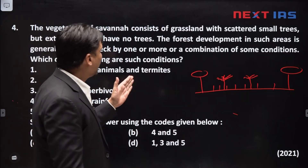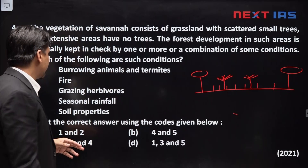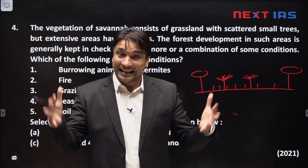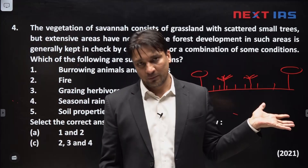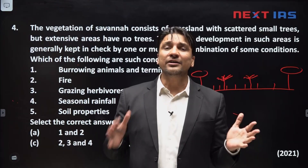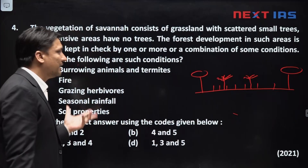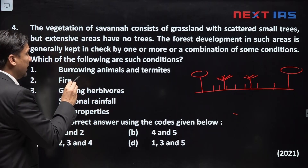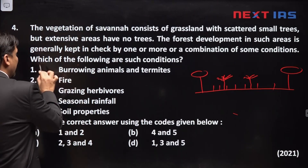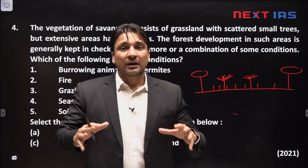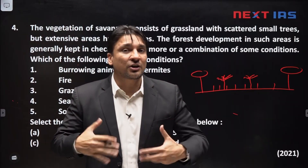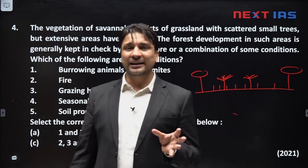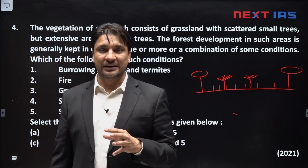This is the vegetation of the savannah region. The forest development in such areas is generally kept in check by one or more conditions. The first factor is burrowing animals and termites. Burrowing animals and termites enrich the soil — they cause aeration of the soil and make the soil more fertile.